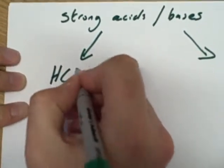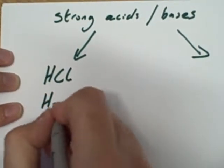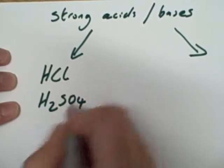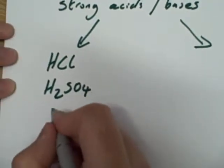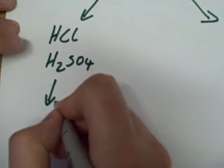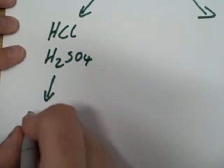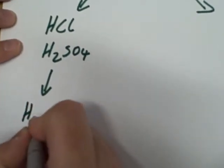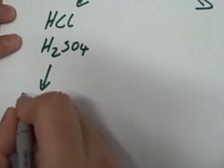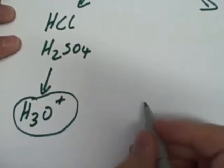Classic examples of strong acids: hydrochloric acid, sulfuric acid, very strong acids. And these acids fully dissociate, and what that means is you get lots and lots of H3O plus ions that fully dissociate.